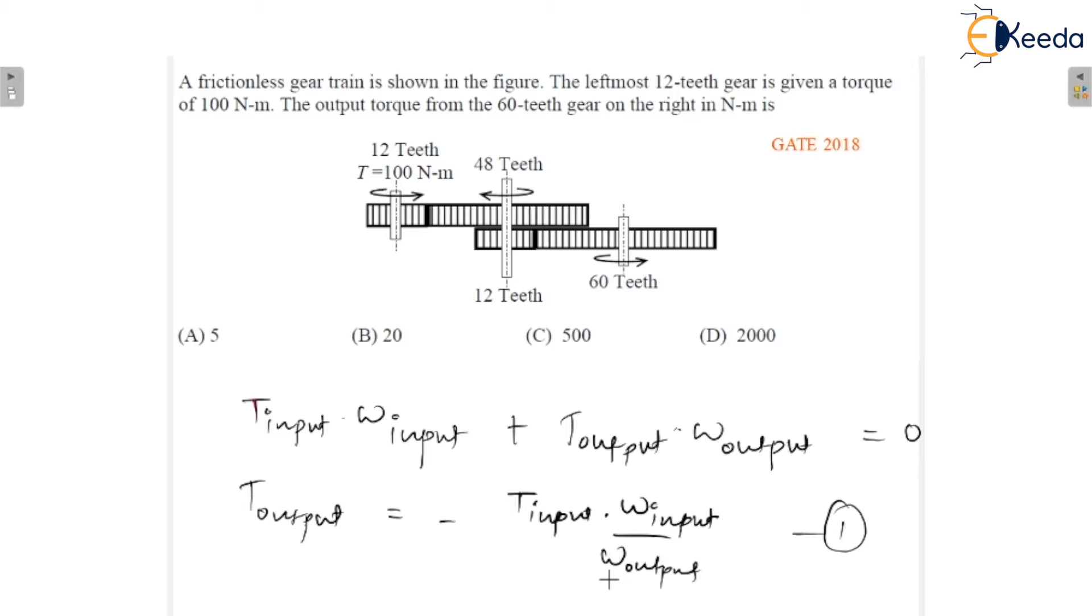See, input torque is given. So, we have to calculate this velocity ratio, ω_input upon ω_output. Can I write ω_input upon ω_output as N_input upon N_output? This is the speed in RPM.